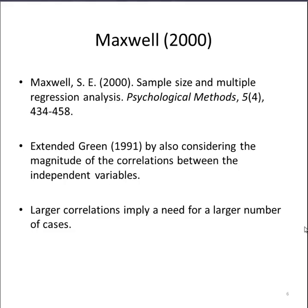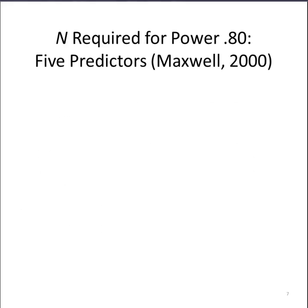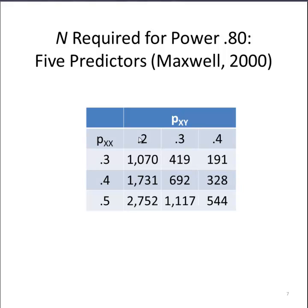I'm going to show you the results associated with some of his work, and I suspect you'll be disturbed by the size of the samples that you need to conduct a multiple regression. Here is the n required for a power of 80 — an 80% chance of rejecting the null hypothesis when it is in fact false — and you have 5 predictors. If the average correlation between the independent variables is 0.3, and the average correlation between the independent variables and the dependent variable is 0.2, you would need a sample size of around 1000 to evaluate the statistical significance of all 5 beta weights and the multiple R-squared value.